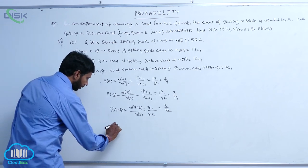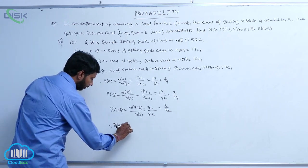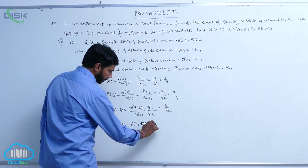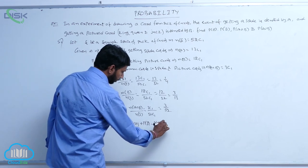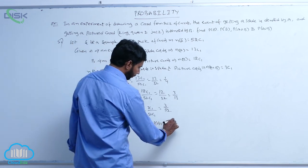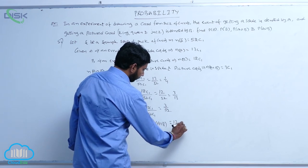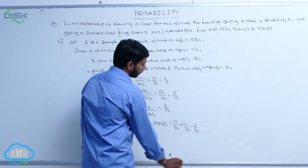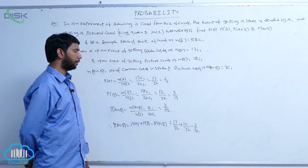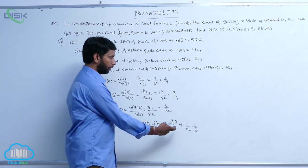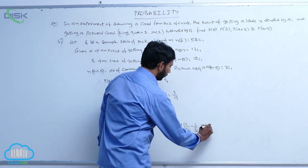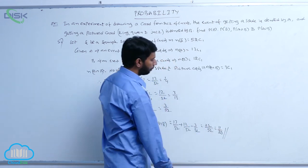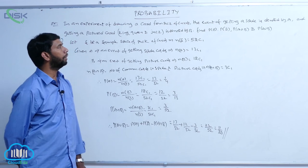Now P of A union B, by using the addition theorem: P of A union B is equal to P of A plus P of B minus P of A intersection B, equal to 13 by 52 plus 12 by 52 minus 3 by 52, equal to 22 by 52, equal to 11 by 26. So 11 by 26 is the value of P of A union B.